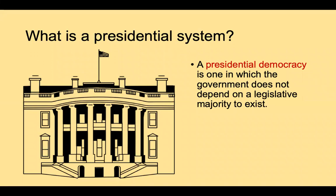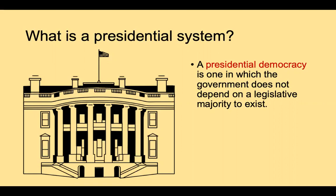Presidential democracy is probably the one we're most familiar with, because the United States is a presidential democracy. This is a democracy where the government does not depend on the legislative majority to exist. That means the government or chief executive is elected independently — they don't depend on decisions made by a legislative majority that forms after an election. Instead, voters vote for that president directly, and the president emerges from a competitive race between contestants.